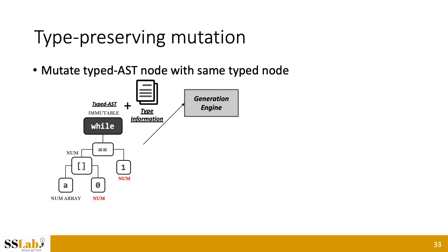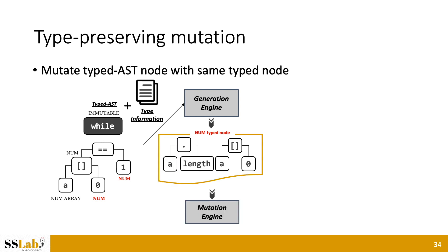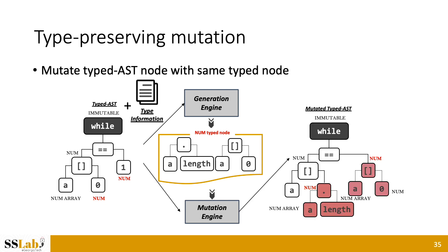Let me explain the details of type-preserving mutation. DAI first receives the typed AST and type information from the previous process. When we want to mutate a marked number-type node, the generation engine generates typed AST nodes of number type by utilizing existing identifiers in the context. For example, it may produce array property and array indexing as number-type nodes. The generation engine maintains type information of parameters and return values of JavaScript APIs, as well as type information of properties for every type of object. The mutation engine then replaces the existing node in the typed AST with the generated typed node.